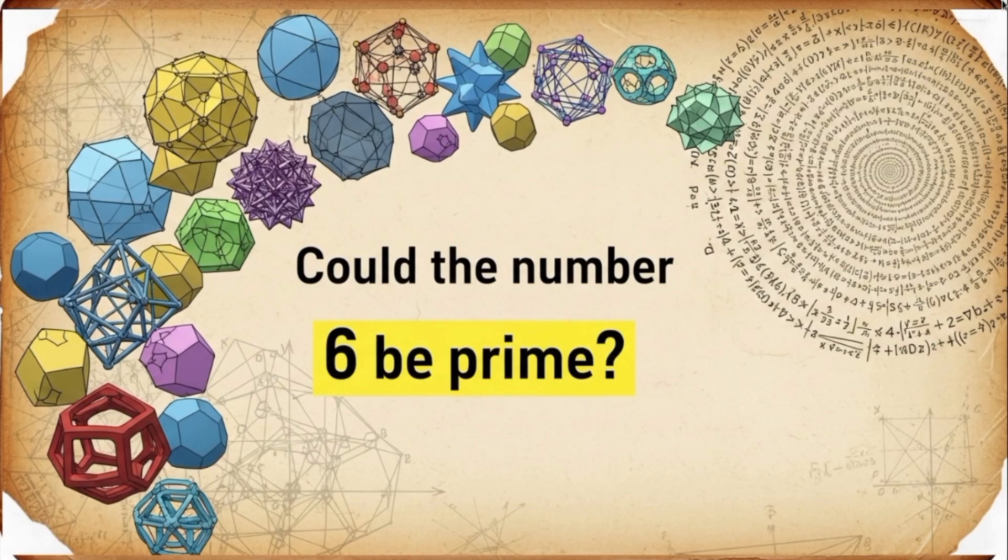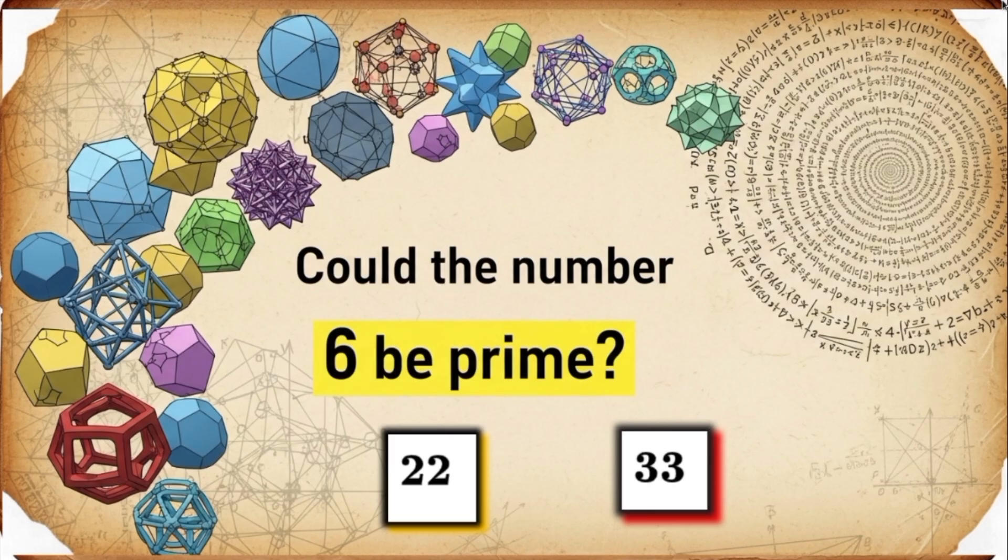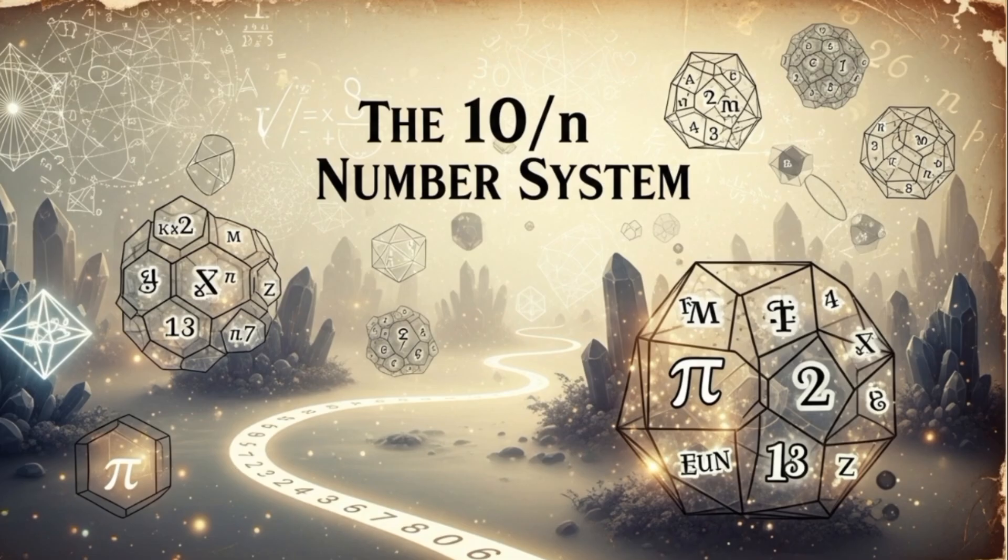What if I told you that the number 6 could be prime? Or that 22 and 33 are part of an exclusive club of primes that mathematicians have overlooked for centuries? Today we are exploring a fascinating concept I call the 10 over p system, a simple idea that rewrites the rules of arithmetic and reveals a hidden world of numbers.